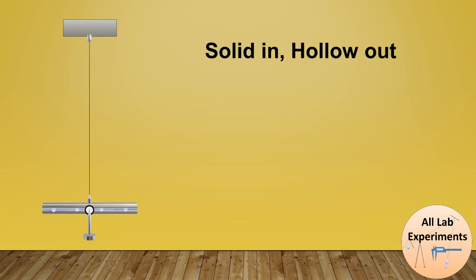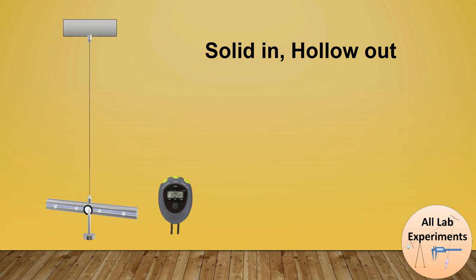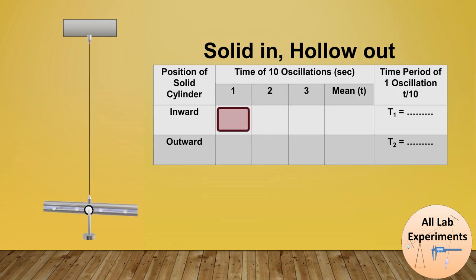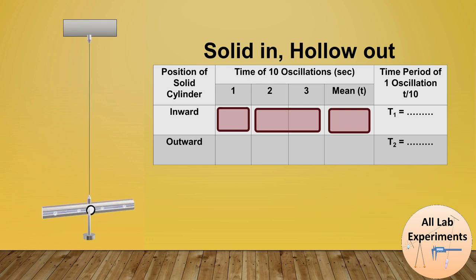With solid cylinders inside and hollow cylinders outside, we will gently apply a force and oscillate. Switch on your stopwatch. One thing to take care: the motion in Maxwell's needle should only be horizontal. Now we will make a table. Each time, observe the time for 10 oscillations and repeat this experiment two more times. After that, take the mean and divide it by 10 to get the time period of one oscillation, which we call T₁.